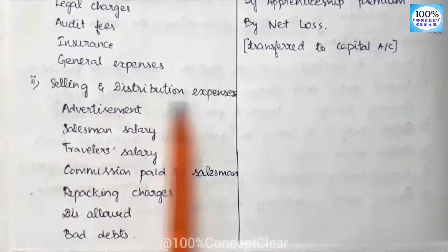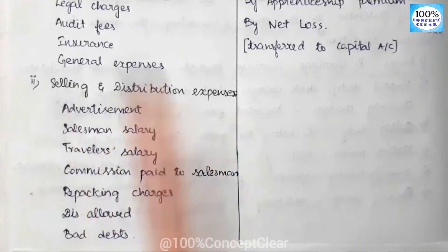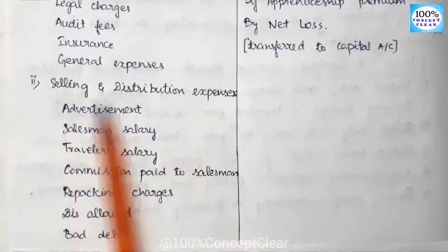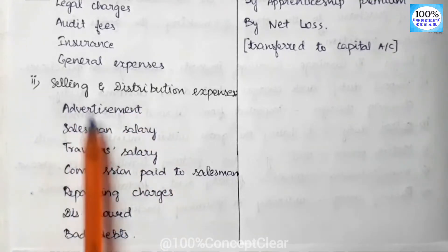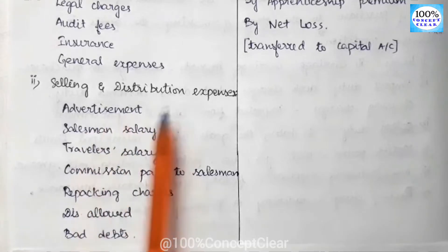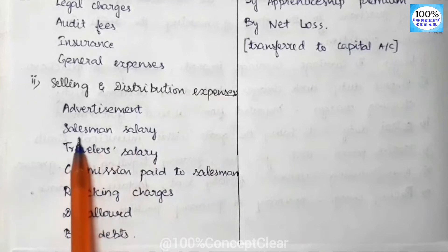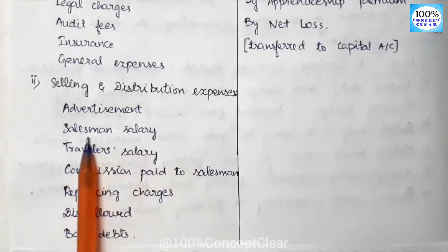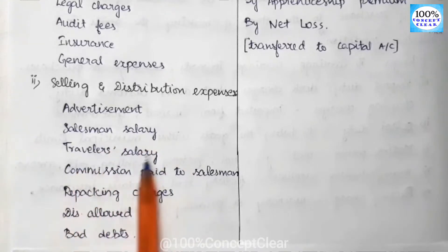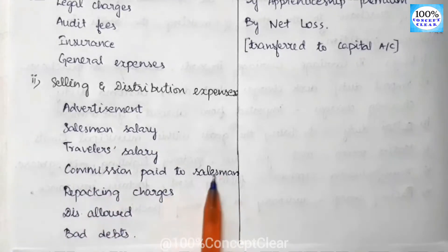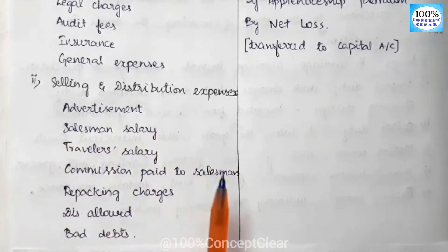Next is selling and distribution expenses. When we are selling our product and distributing to our customers, these are indirect expenses. They include: advertisement — we advertise our product; salesman salary — we pay our salesman's salary; travellers' salary; and commission paid to salesman. These are the selling and distribution expenses.